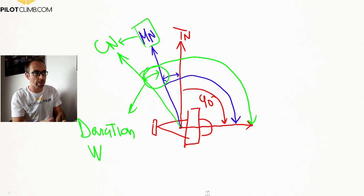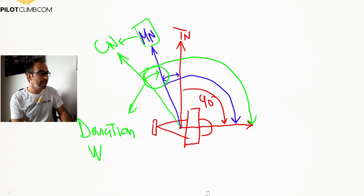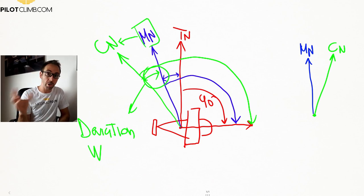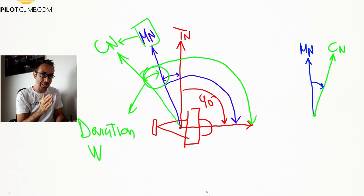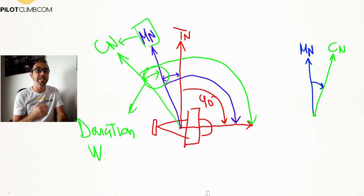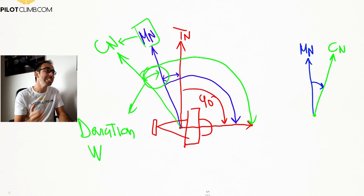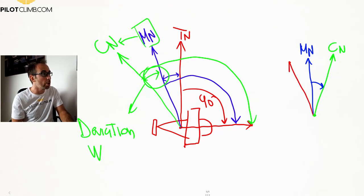Since every aircraft has its own magnetic field, you might also get an easterly deviation, meaning the compass north is east of the magnetic north. The same logic applies to variation: a westerly variation means the magnetic north is west of true north; an easterly variation means the magnetic north is east of true north. An easterly deviation means the compass north is east of the magnetic north.